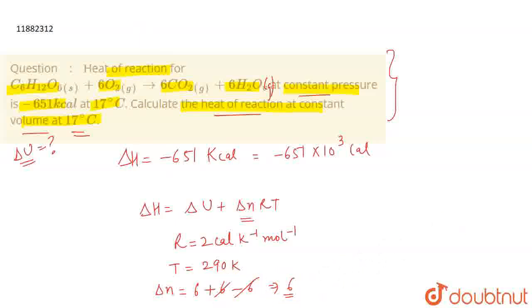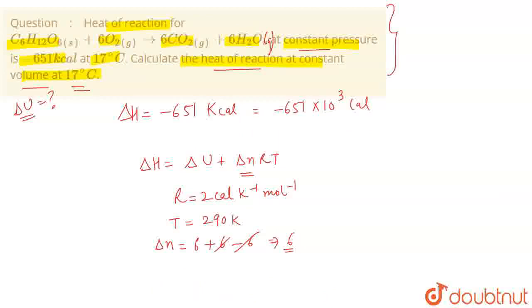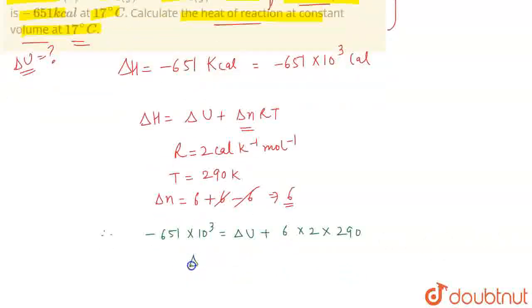Delta N is 6 minus 6 which equals 0. Now if we calculate the value, delta H is minus 651 into 10 power 3.